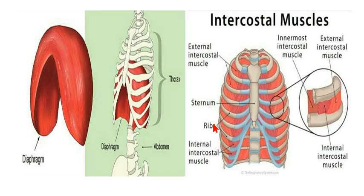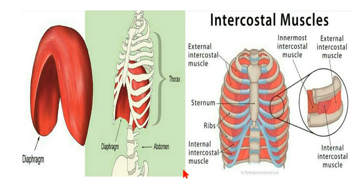These pictures will show you the diaphragm and intercostal muscles in detail. The diaphragm is a dome-shaped muscular structure that separates the thoracic region from the abdominal region. Intercostal muscles are found between the ribs, and there are two types: external intercostal muscles on the outside and internal intercostal muscles on the inside.